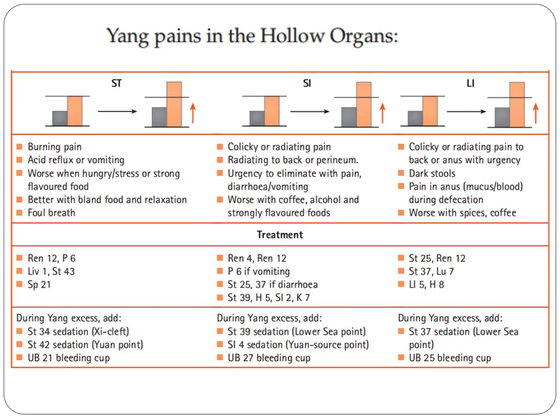Thus, signs and symptoms manifest like burning pains, acid reflux, or vomiting — worse when hungry, stressed, or with strong-flavored food. Better with bland food and relaxation, and foul breath.